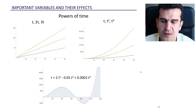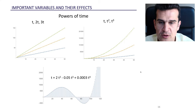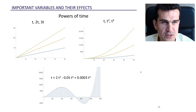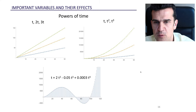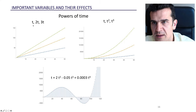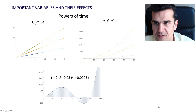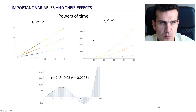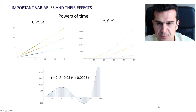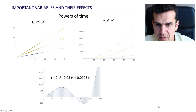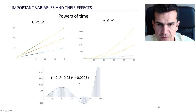A first set of variables that are often useful to make predictions in time series analysis is powers of time. With powers of time, if we include the variable t — the variable time — we can capture linear trends, and by including more and more degrees of time, we can capture pretty complex trends. For instance, here at the bottom you can see what kind of trend we may be able to capture with polynomials of degree 4 in time.